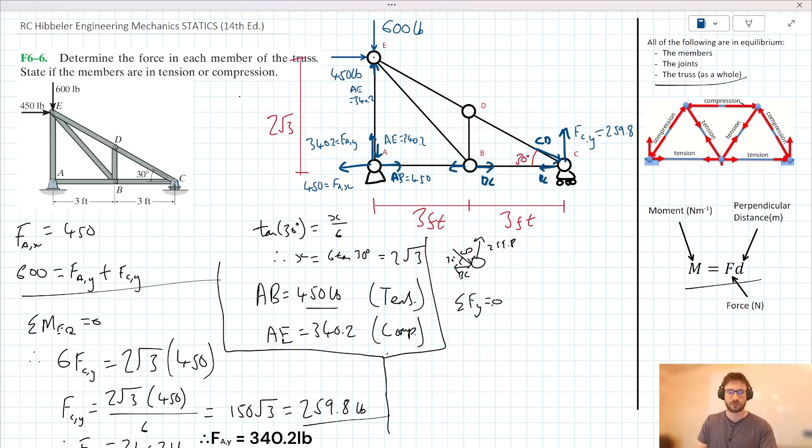the sum of the forces in the Y are equal to zero. Therefore, we could say CD sine 30 is equal to 259.8. Therefore, let's rearrange here. We can say CD is equal to 259.8 all over sine 30, which when we put into our calculator, gives us a value of 519.6 here. 519.6 pounds.